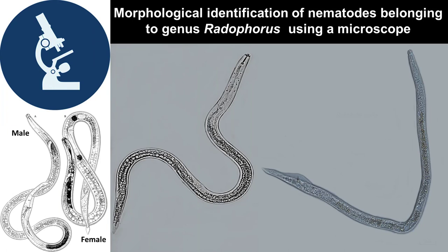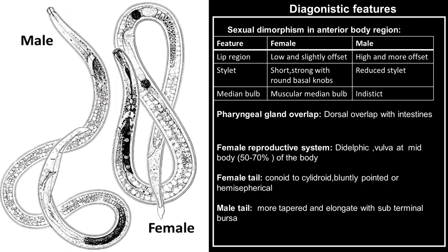Welcome to our practical lecture. This time we are going to look at morphological identification of nematodes belonging to genus Radopholus by using a microscope. As usual, we shall start with a brief recap of the diagnostic features starting from the anterior to the posterior end.